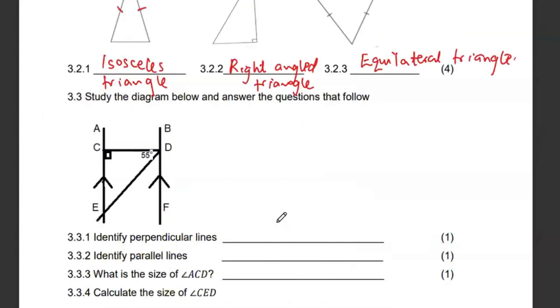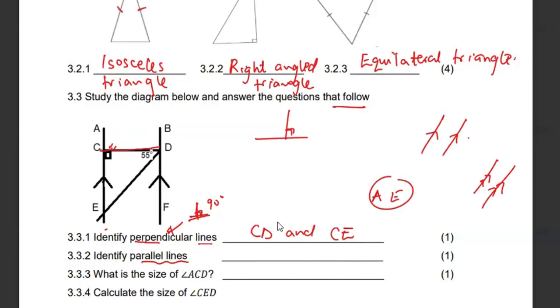Then 3.3, study the diagram below and answer the questions that follow. Identify the perpendicular lines. Perpendicular lines simply means that those lines are forming a 90 degree, meeting at 90 degrees. The symbol for 90 degrees is basically that small square box, meaning we have it here. So this line CD and then the line CE. The line CE can also be extended up to A and you can say AE. Then identify the parallel lines. Parallel lines are basically lines that never meet. We normally use arrows to represent those lines. So those lines are this line AE and this line BF.